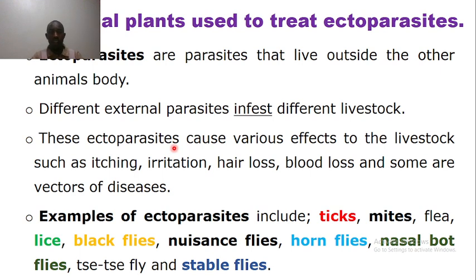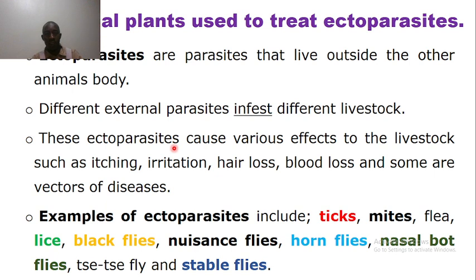We define disease as a deviation from normal state — a state of ill health. Various diseases affect various systems. For example, we have those that affect the nervous system, and respiratory diseases such as CBPP, pneumonia, and CCPP. We have those that affect the integumentary system or the skin, such as ringworms, and those that affect the digestive system, the GIT.